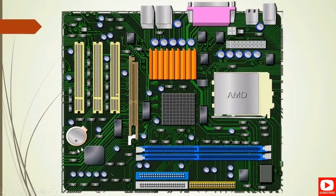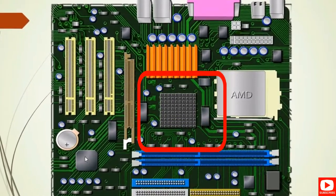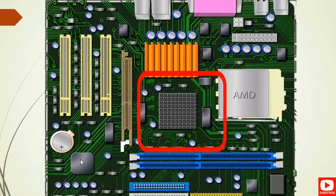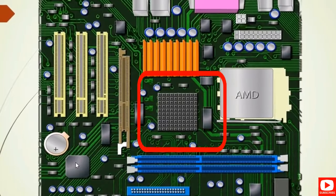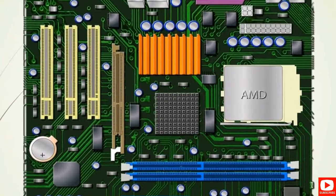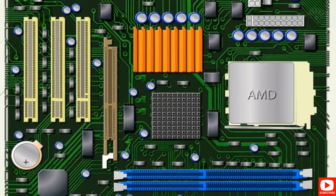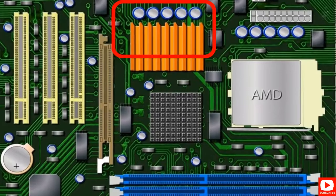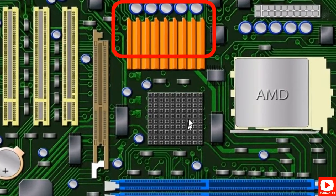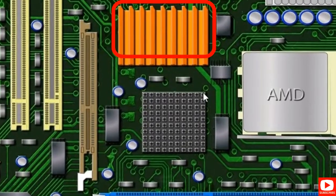This is the north bridge, also called the GMCH. Next to it we have the graphic card. So here we can see the north bridge or GMCH and the integrated graphic card.